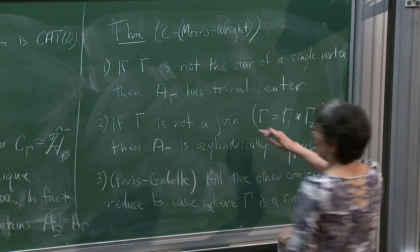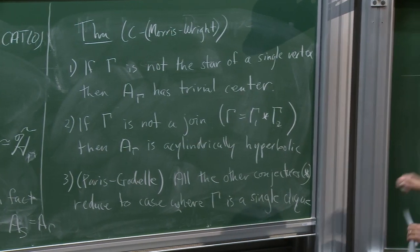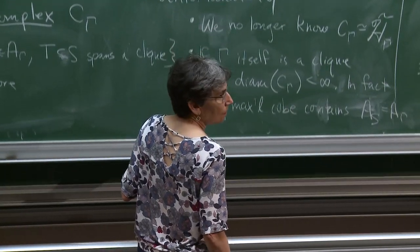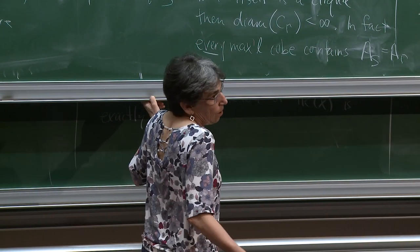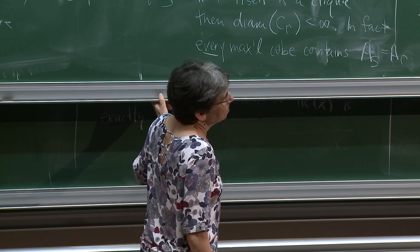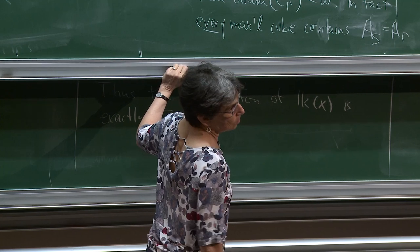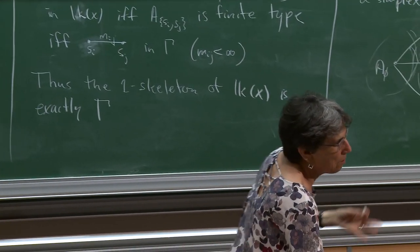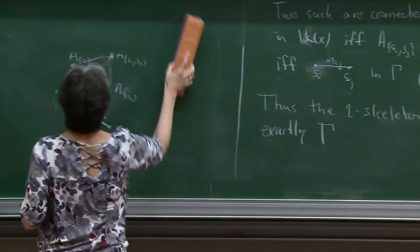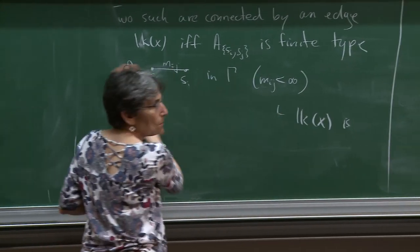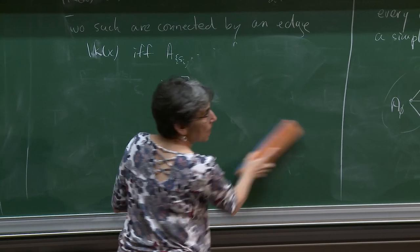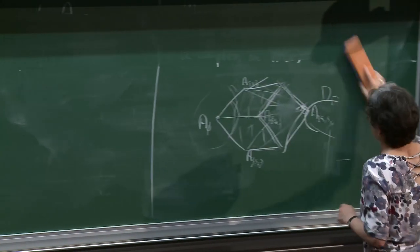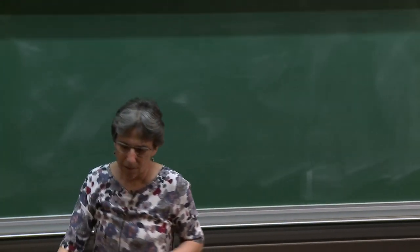This theorem isn't quite as good as we'd like. When I say 'not a star' and 'not a join,' I'm talking about the unlabeled graph. We'd really like to say A(γ) is acylindrically hyperbolic if γ is not a product of two smaller things — that is, if A(γ) ≠ A(γ₁) × A(γ₂). We'd need twos on all the connecting edges to turn the join condition into a product condition.